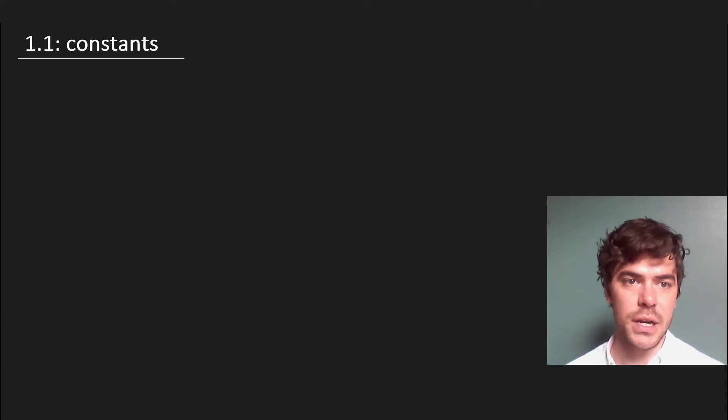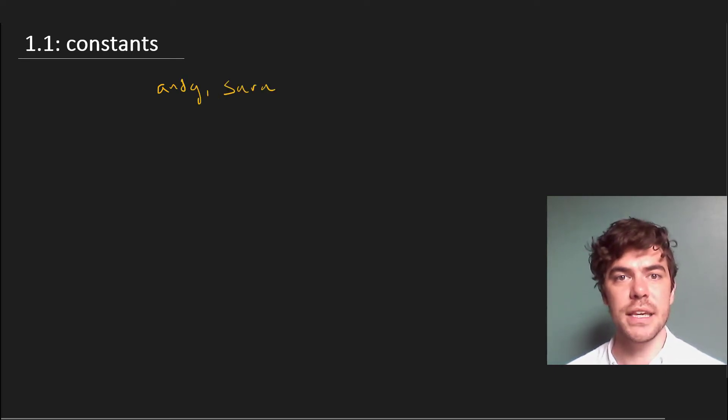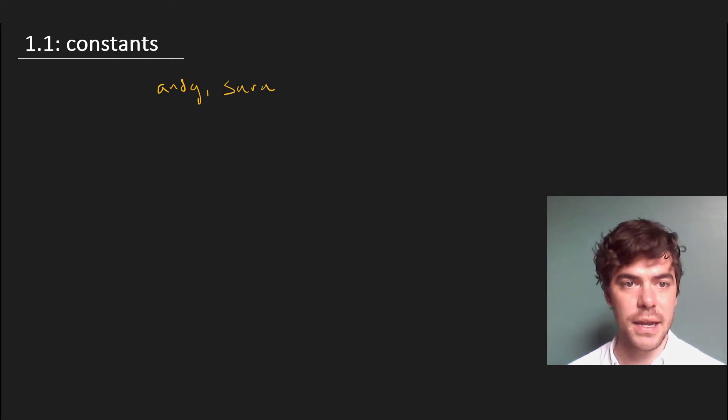Now constants just work like names. We typically write them in lowercase, so we have names for things like Andy, Sarah, and so on, but we can also write these as lowercase letters from the beginning of the alphabet, like A, B, C, and so on, and that's what we typically do.